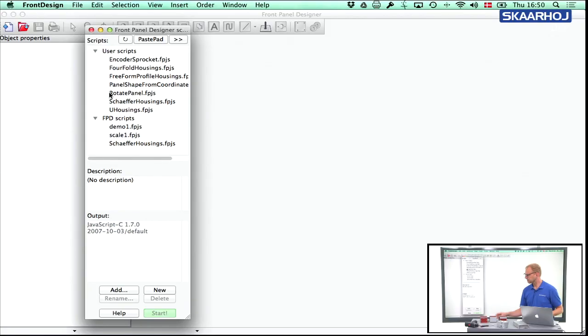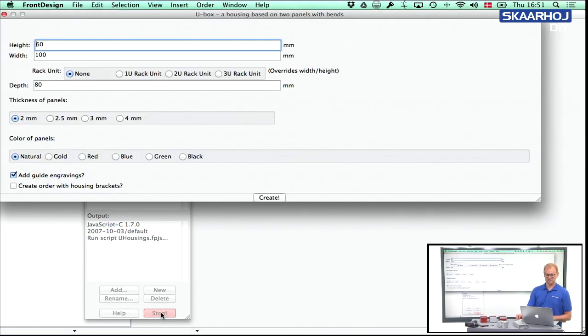So it means that inside front design, you will find the U housing or you can have the U housing script in the menu like this. Otherwise, you can just copy paste it from my GitHub repository as you like. Anyway, let's start it.